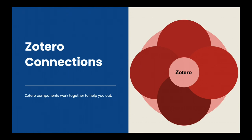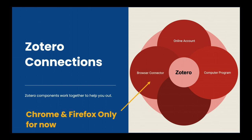Zotero works by linking up four separate things: a Zotero account online, a downloaded Zotero program, a browser connector, and if you're using Microsoft Word, a Word plugin. If you're using Google Docs, don't worry, you won't need this.